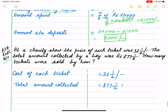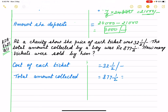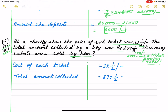Now it is Exercise 2C, question number 11. At a charity show, the price of each ticket was thirty-two and a half rupees. The total amount collected was eight hundred seventy-seven and one by two rupees, that is one thousand seven hundred fifty-five by two rupees. How many tickets were sold? Suppose a ticket costs one hundred rupees and you give two hundred rupees — you get two tickets: two hundred divided by hundred gives the number of tickets. So: number of tickets equals total amount divided by cost of one ticket.